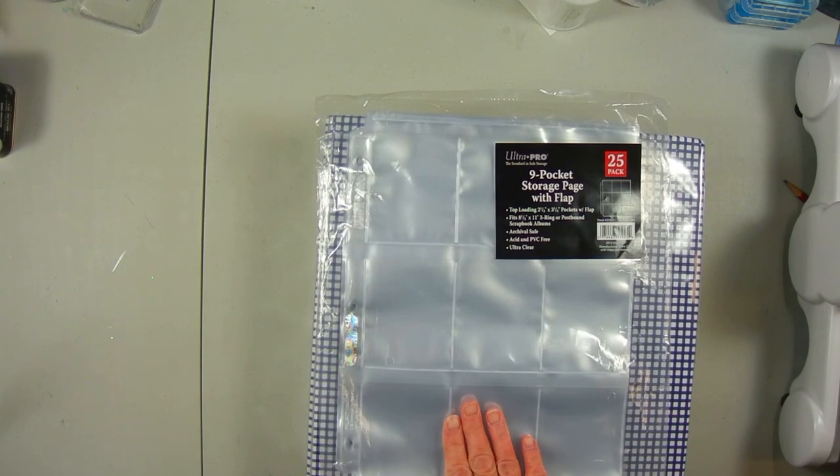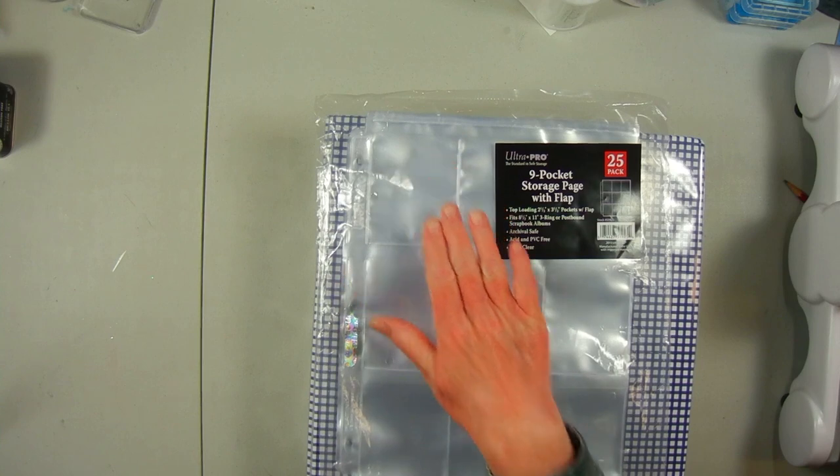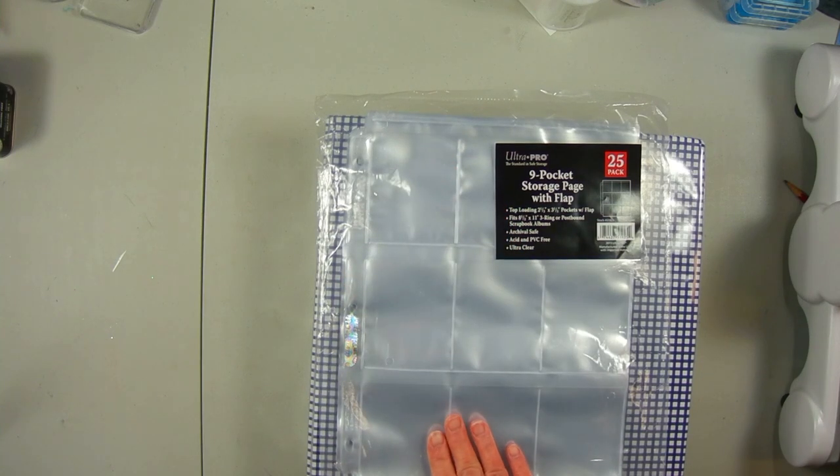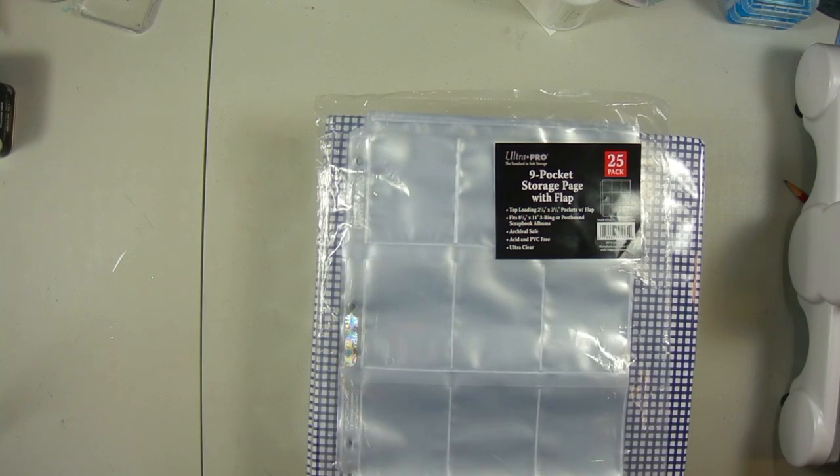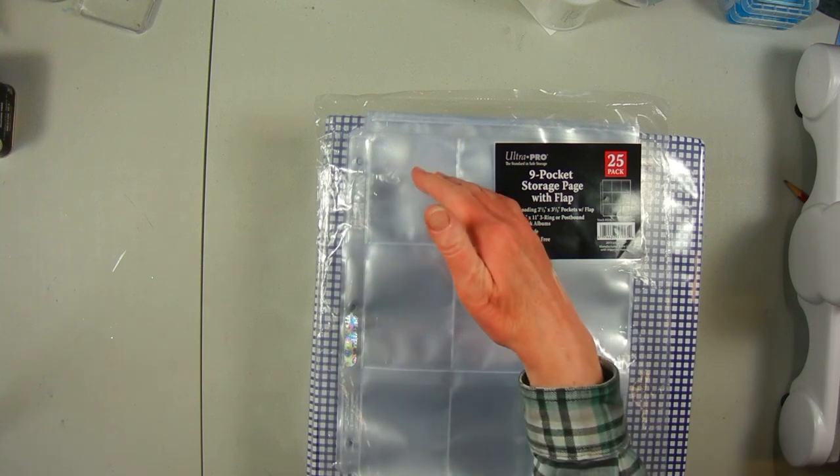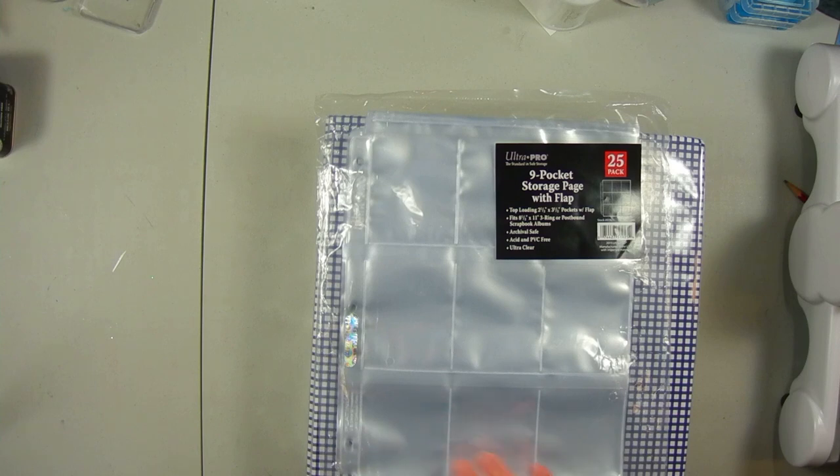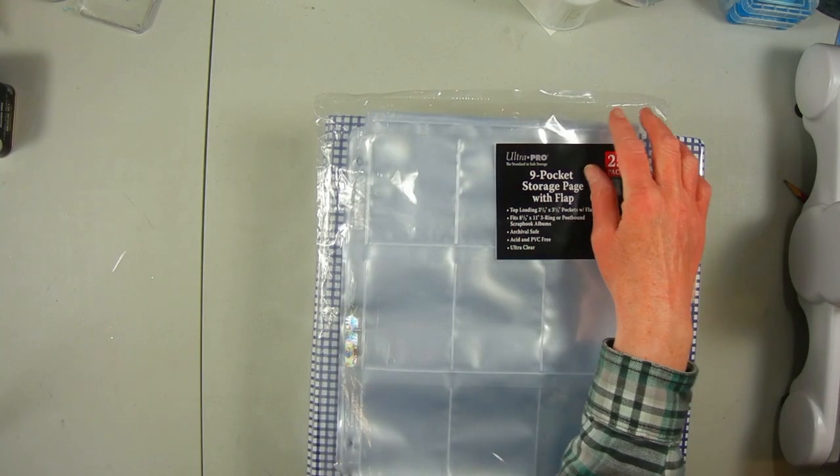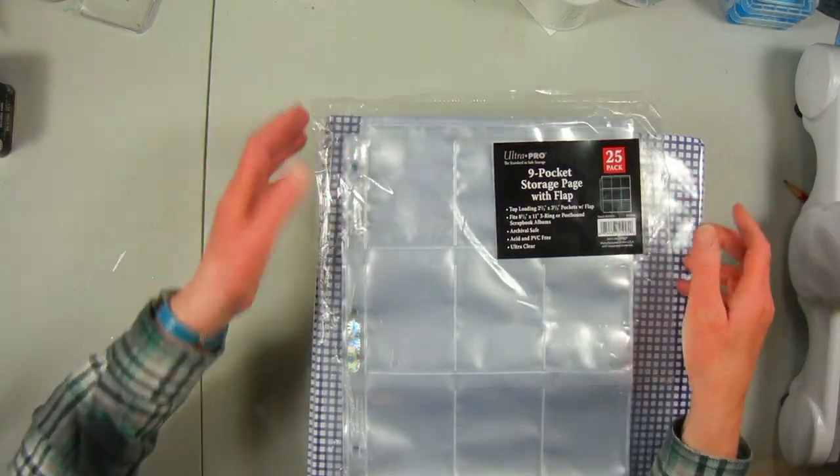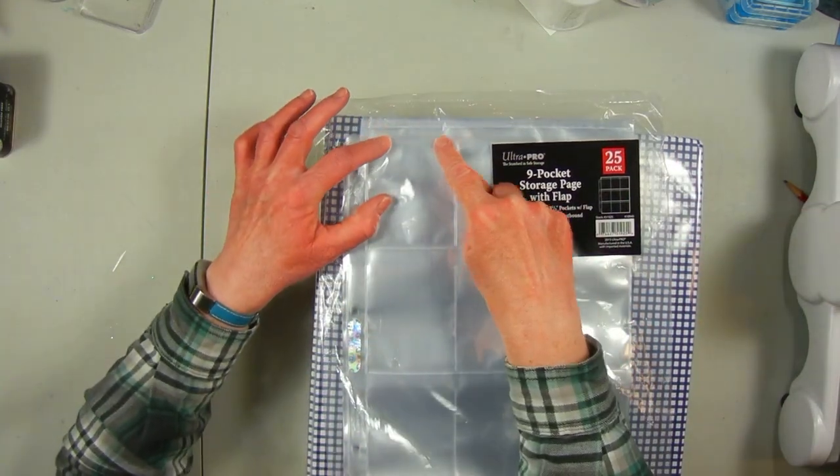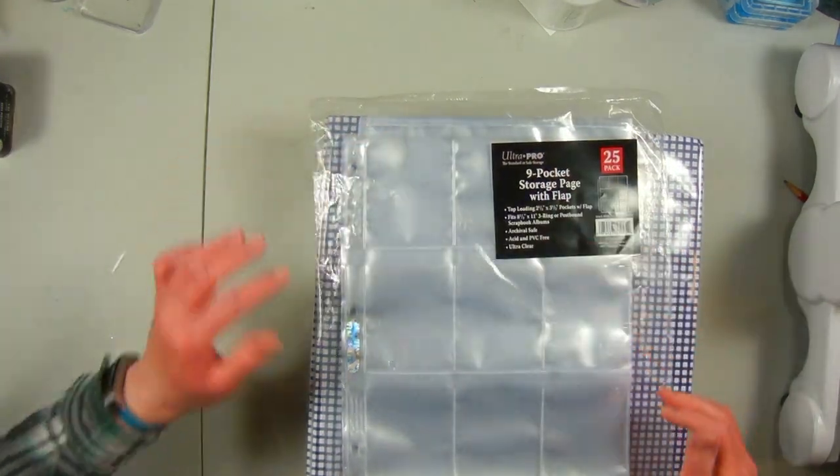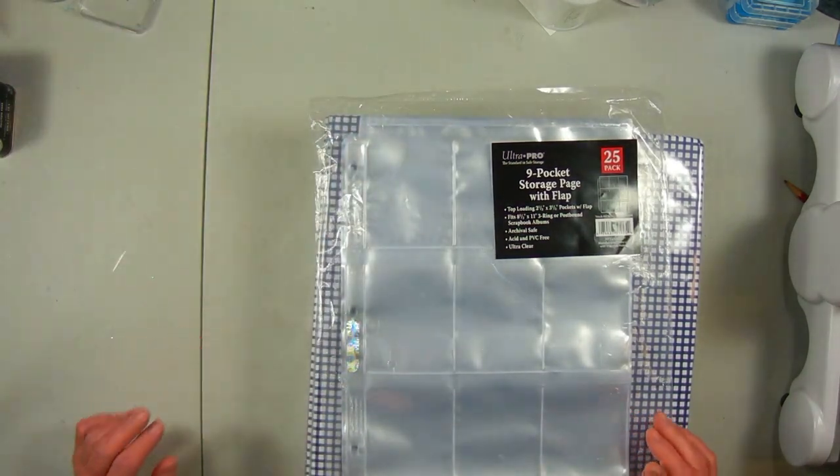I wanted to get these especially for when I store my dies because dies might come out. I'm going to use these for another project of organizing where I'm going to put die cuts that I've already cut out or stamped images so that they're ready for when I want to make a card. If it has an opening on top they do come out. These have a little flap and so that keeps things from sliding out.